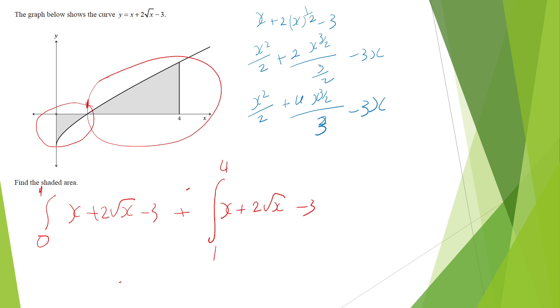Now you can use your graphic calculators. All I need to do, to write as evidence, I'll do x squared over 2, plus 4 x to the 3 over 2 over 3, minus 3x from 0 to 1, and exactly the same from 1 to 4. Use your graphic calculator. The first one gives me 7 over 6 plus the other one gives me 47 over 6, and adding them together should get 27 over 3, which is 9.